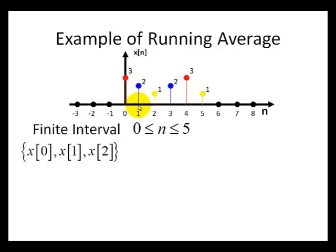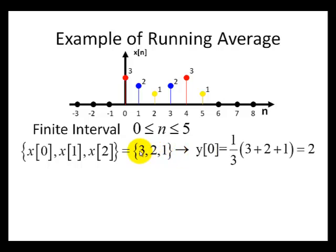X0 has a value of 3, X1 has a value of 2, and X2 has a value of 1. We're going to take the output of these three numbers, add them all up, and take the average. So 3 plus 2 plus 1 equals 6, divided by 3, gives us 2. The index used here is n equals 0, so for n equals 0, we have an output Y0 of 2.